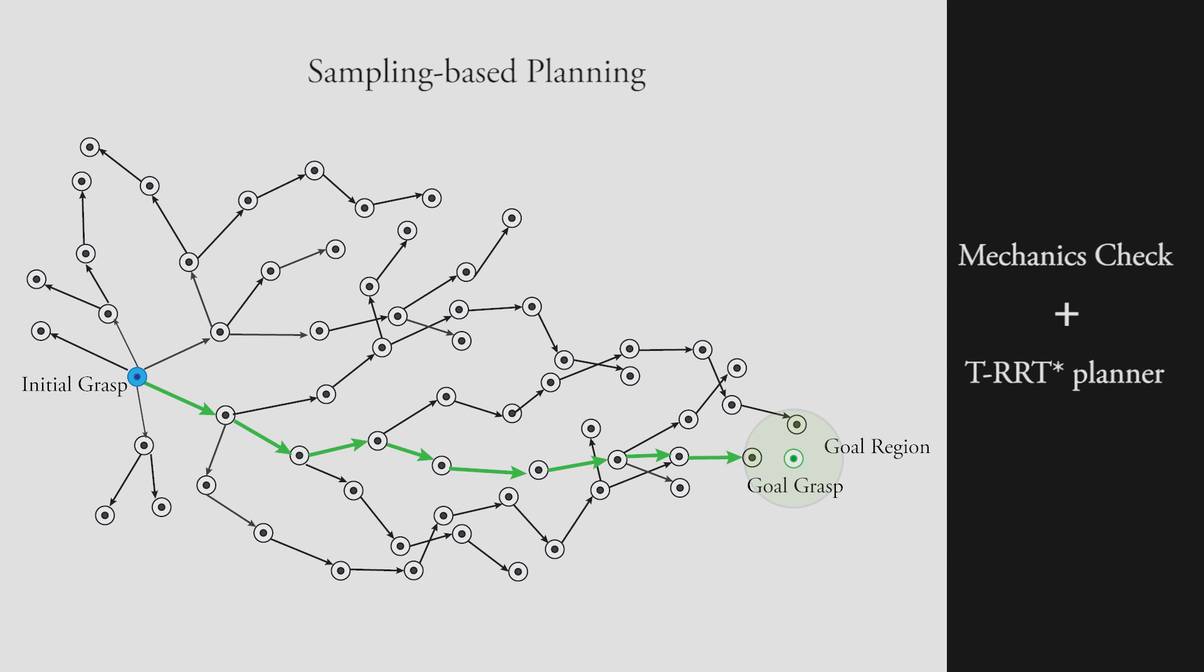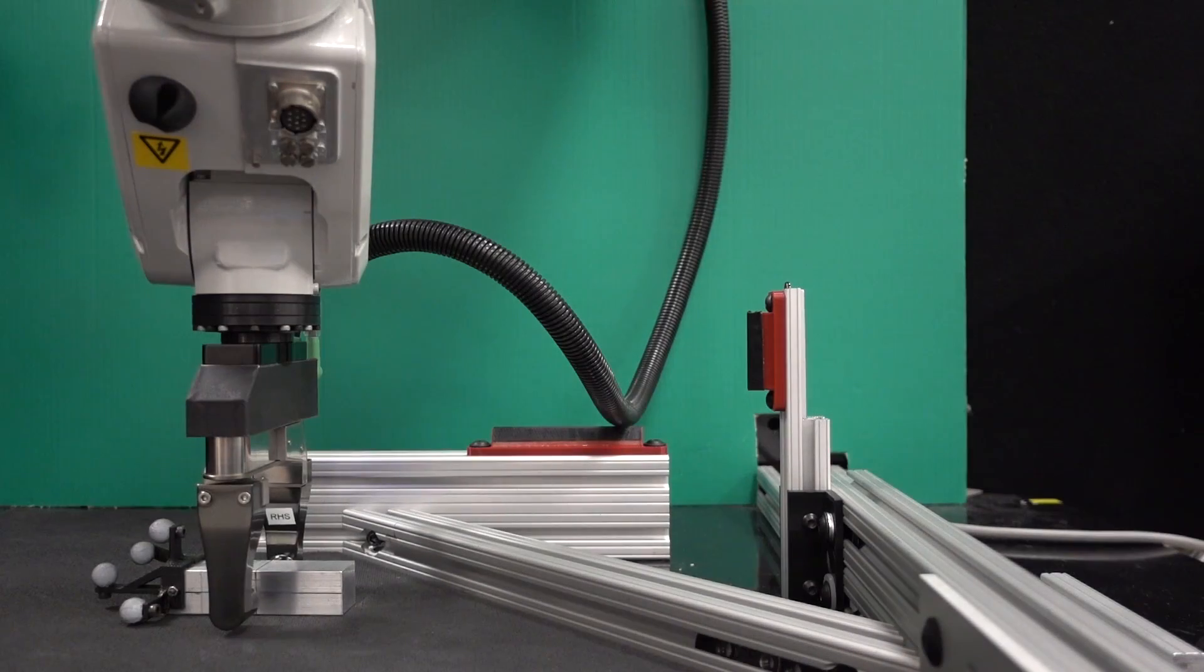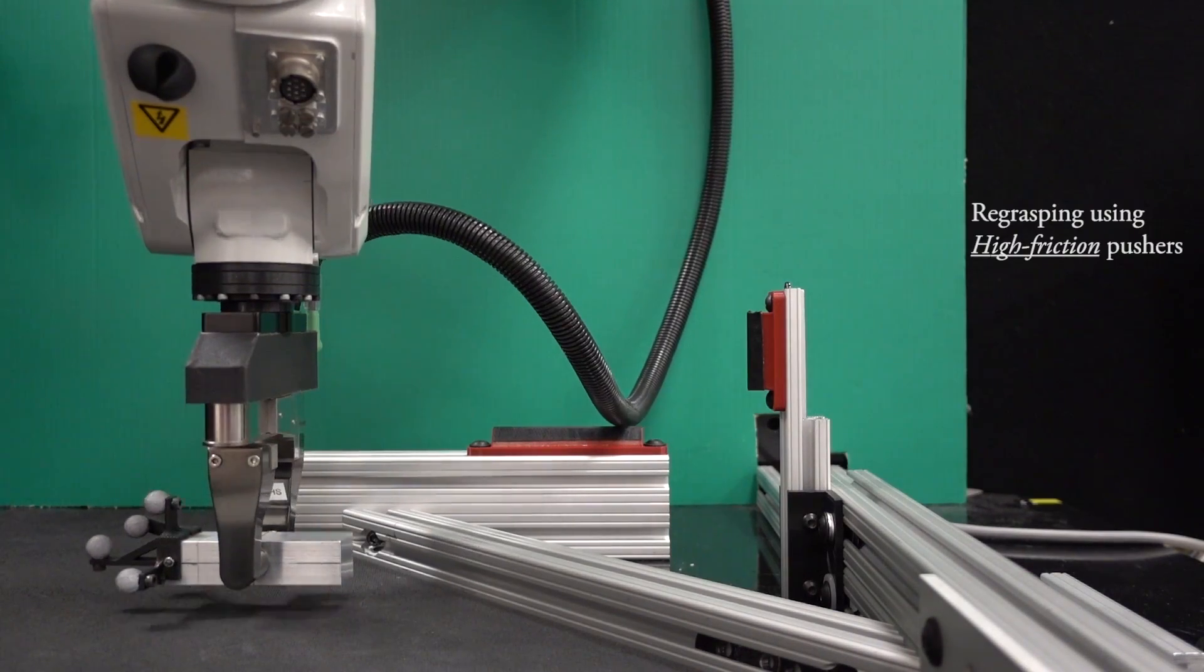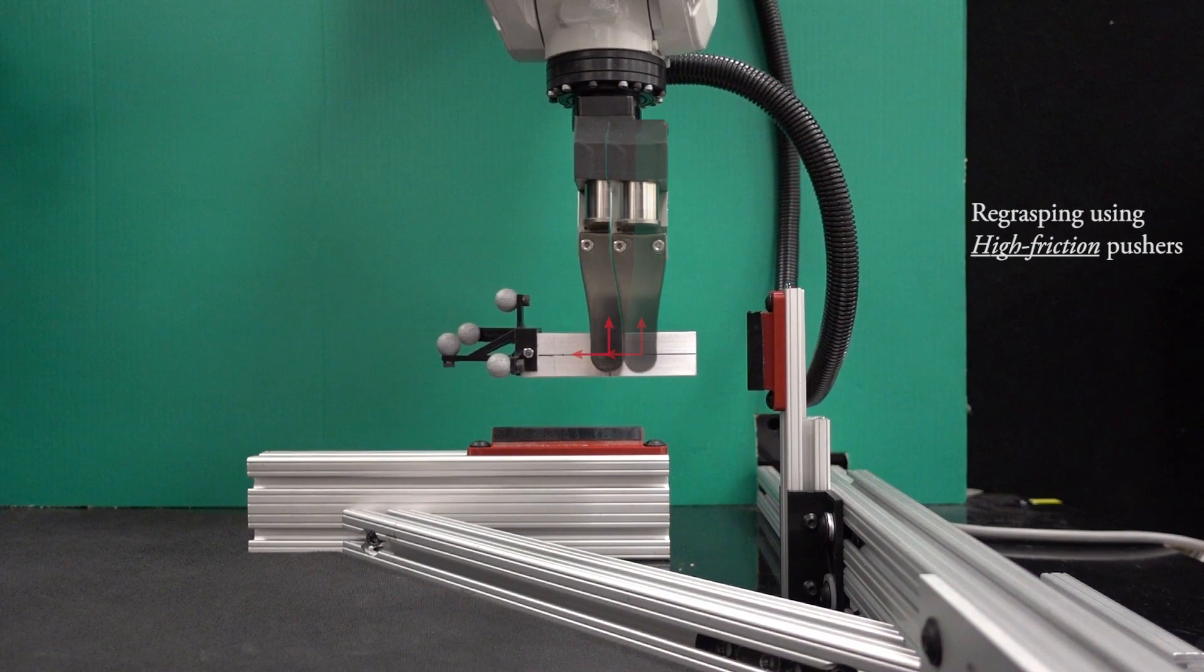To evaluate the capability of our planner, we consider different in-hand manipulations. In the first example, where the robot wants to move the object offset to the center, the robot simply pushes the object from the side as it achieves the desired regrasp.